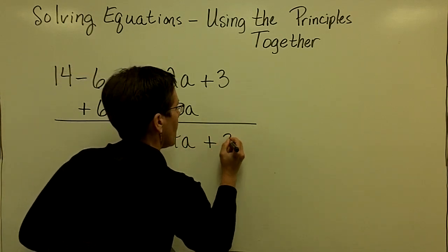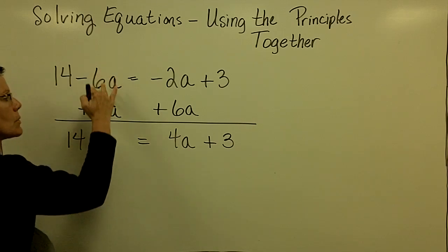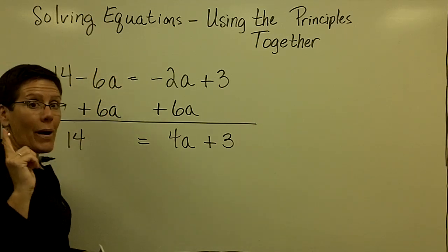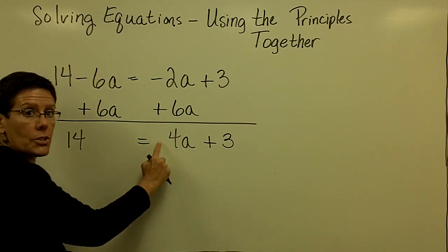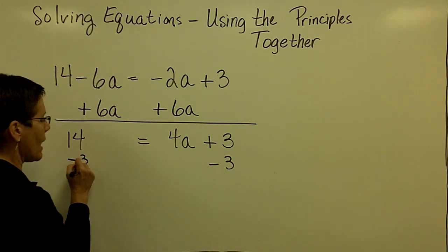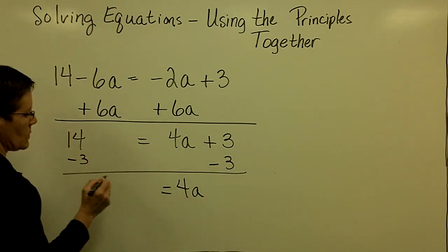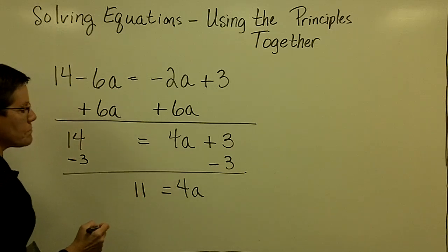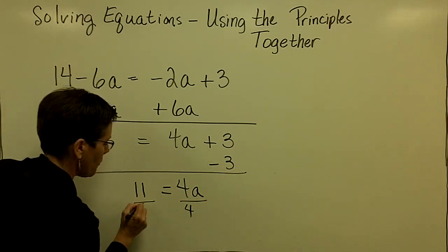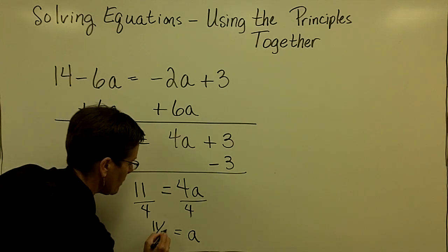So on the right side, I'll have 4a plus 3 equals the 14. Now I have to isolate the variable term. I have to isolate the 4a. So I'm going to subtract 3 from both sides. And I'll have 4a equals, looks like 11. And then I'll divide both sides by 4. And I'll have a equals 11 fourths.